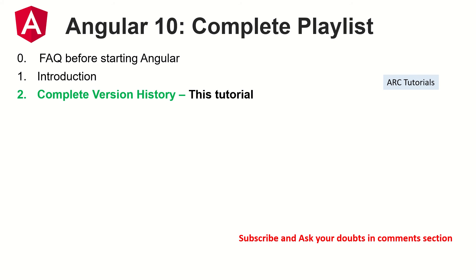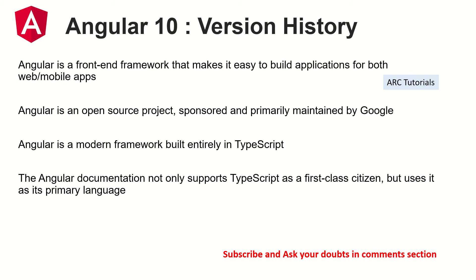So far we have seen some frequently asked questions — that was episode 0. In the first episode, we talked about the introduction and basic details about Angular. Today we will talk about the complete version history of Angular. As a quick note: Angular is a front-end framework that makes it easy to build applications for both mobile and web, it is an open source project sponsored and maintained by Google, and it is entirely written in TypeScript, which is a superset of JavaScript — so whatever you can do in JavaScript, you can do in TypeScript and much more.